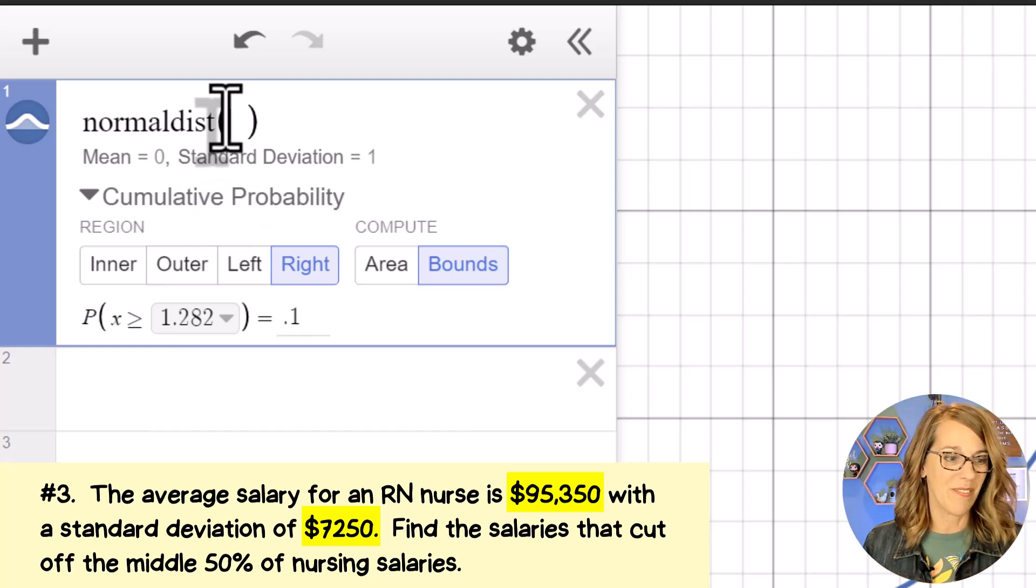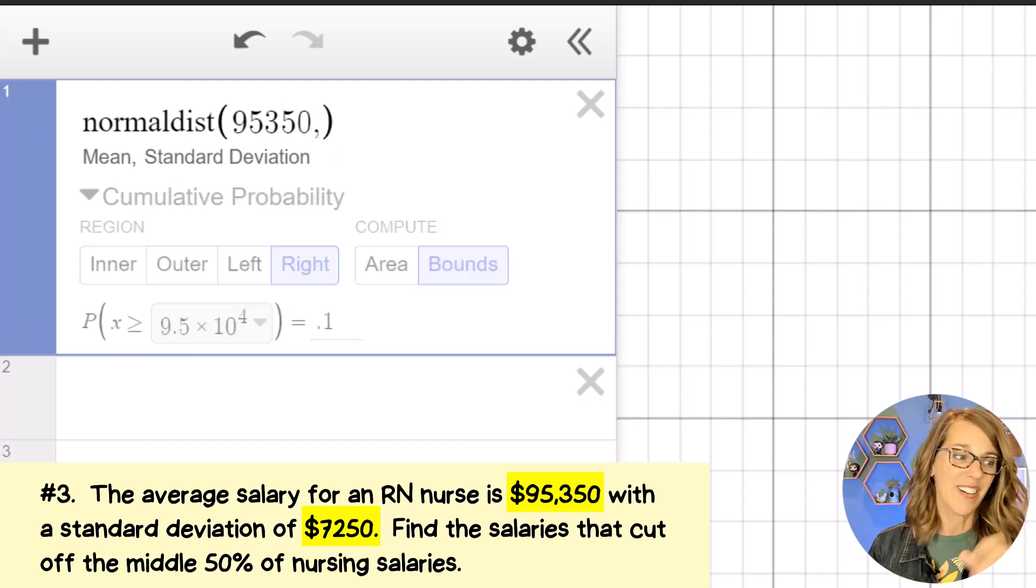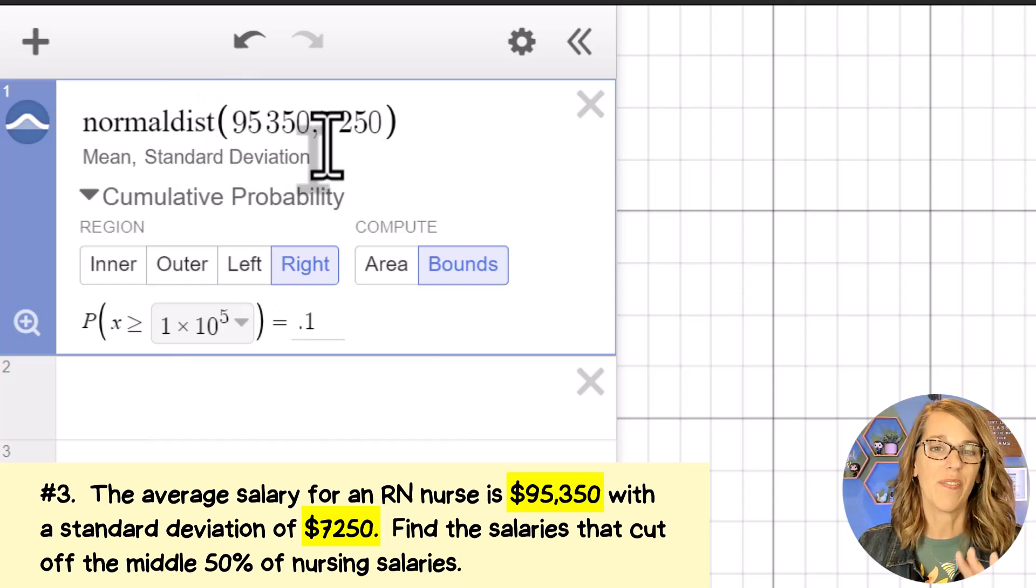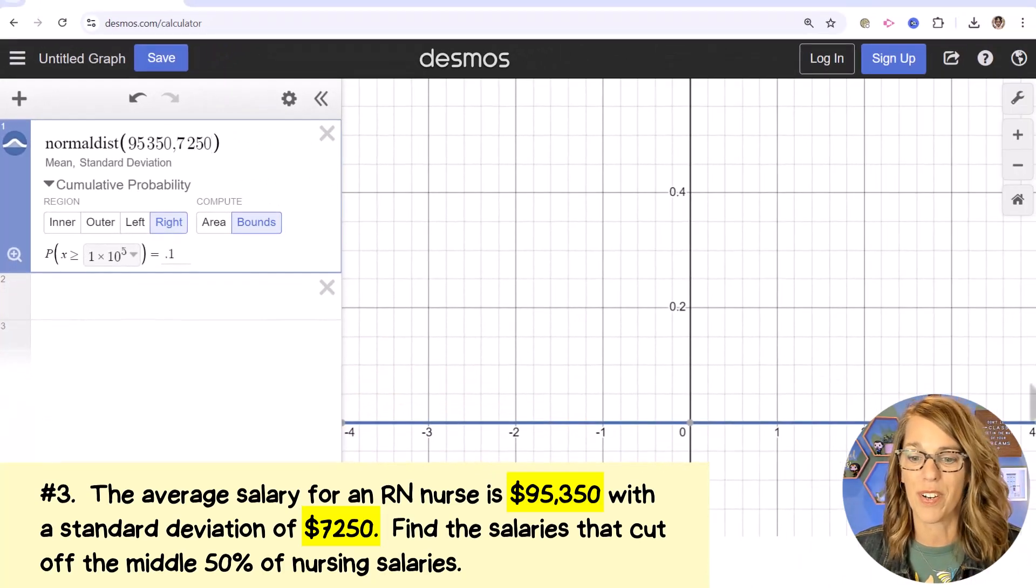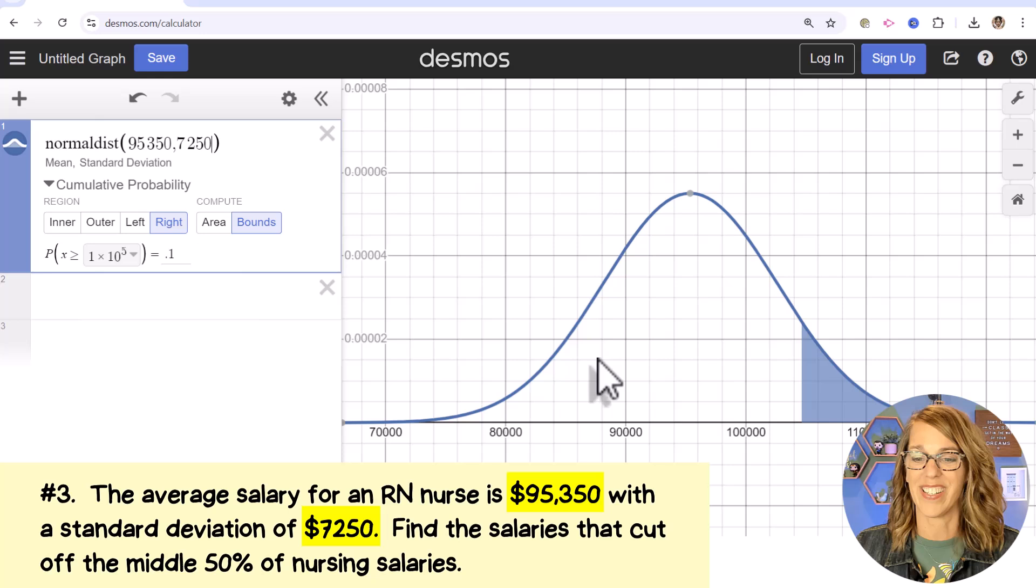My mean for our nursing salary is $95,350. Comma, our standard deviation is $7,250. So I've got a very different looking normal curve, and I can't even see it there on my graph. Let me do zoom fit again so I can see that curve. Okay, so there it is. That looks great.